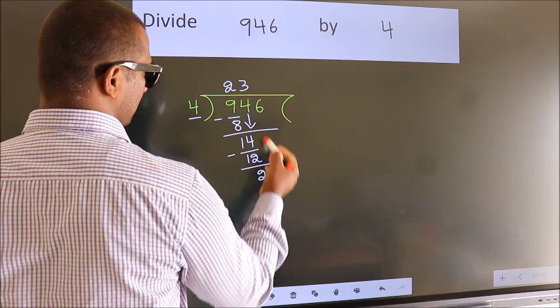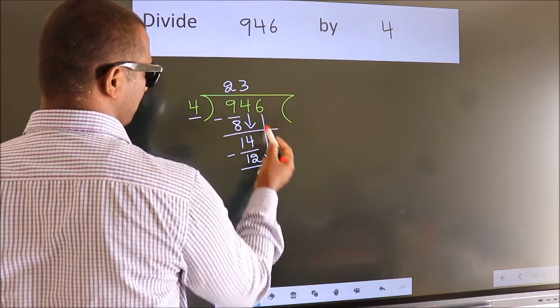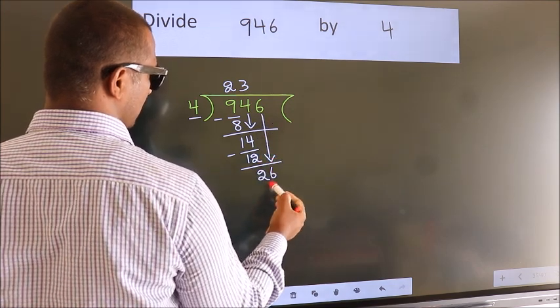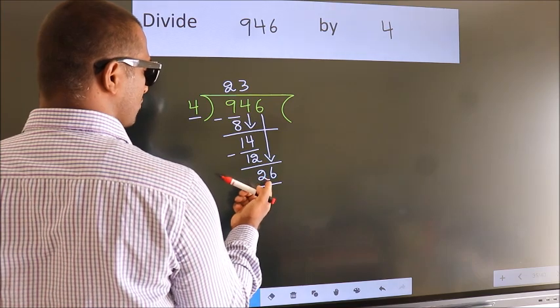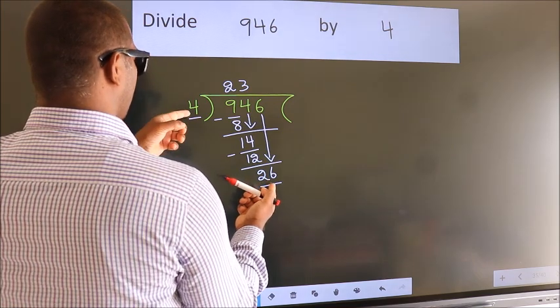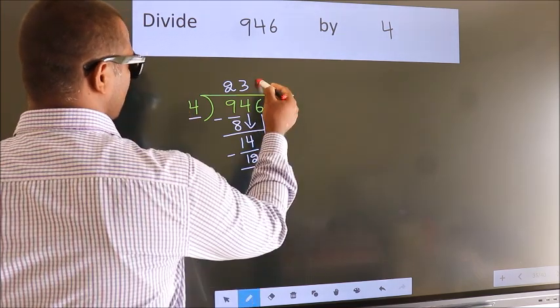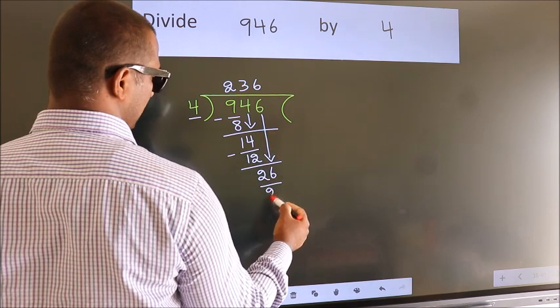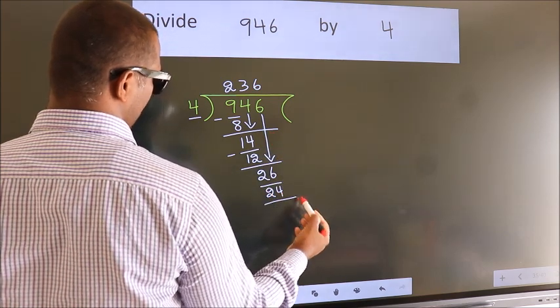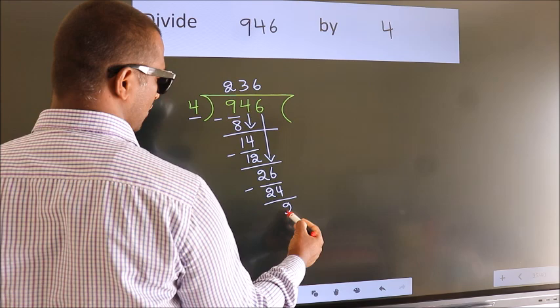After this, bring down the beside number. So 6 down. So, 26. A number close to 26 in 4 table is 4, 6, 24. Now we subtract. We get 2.